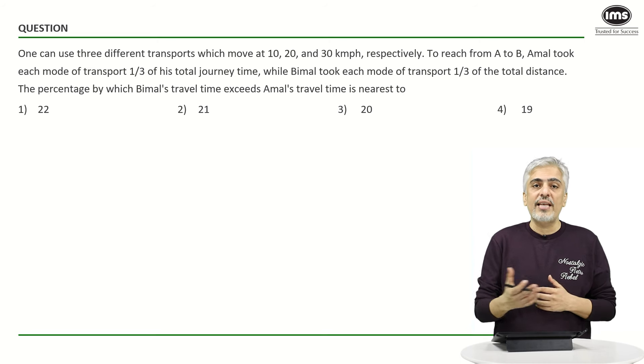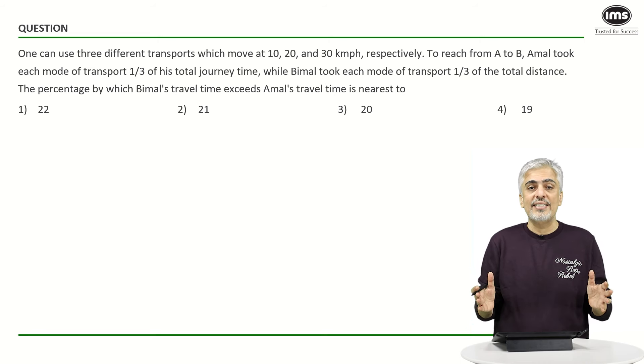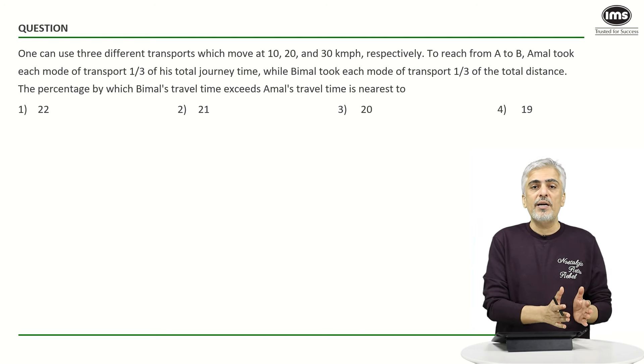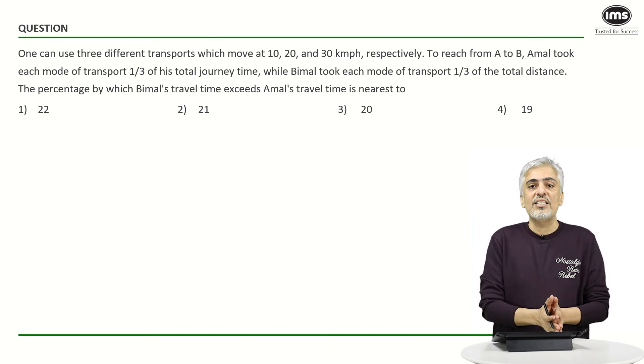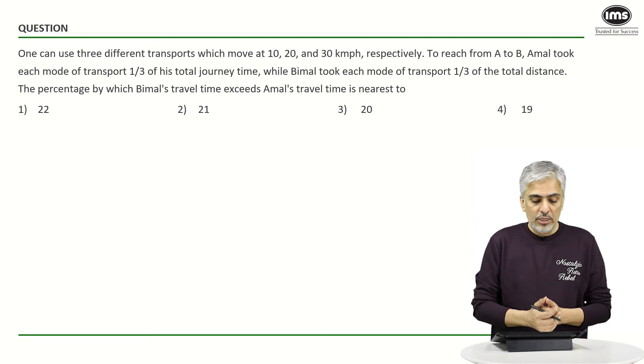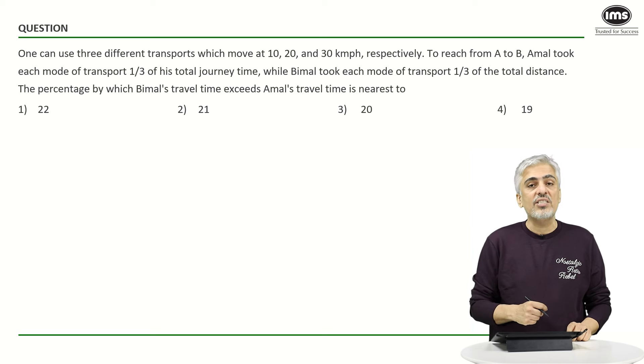From there we can calculate his average speed. But what Bimal did was he broke up his journey into distances. He broke it up into three equal parts in terms of distance and for the first part he was traveling at a speed of 10 then 20 and then 30 and we can calculate his average speed. The question asked is by percentage by which Bimal's time exceeds Amal's time.